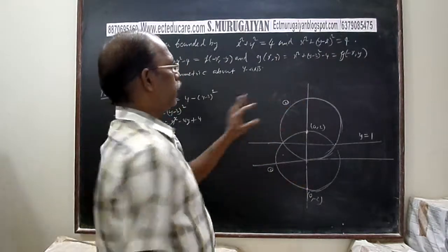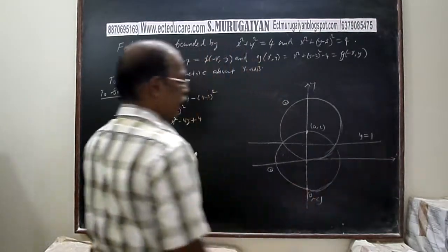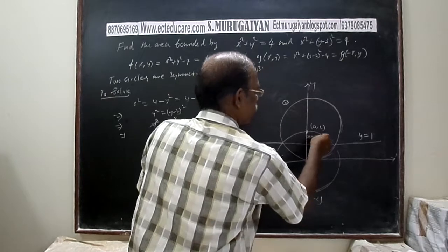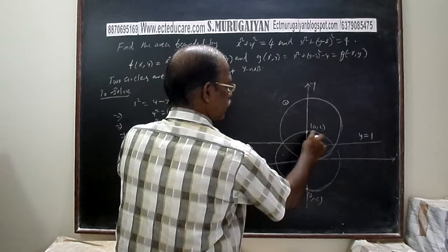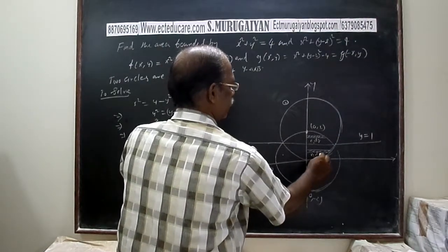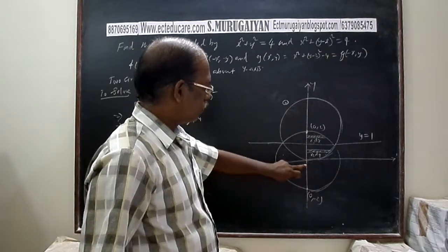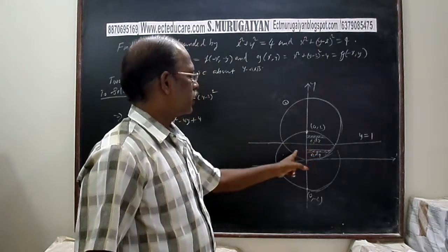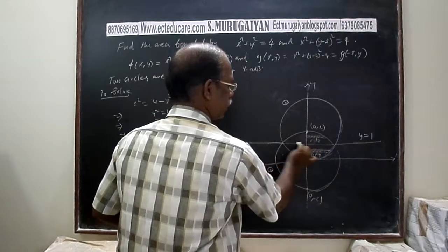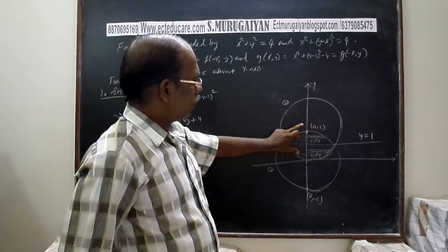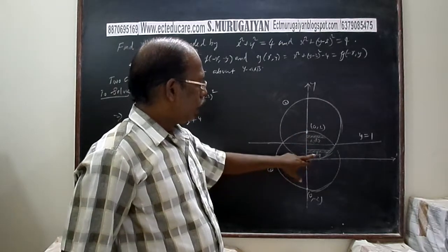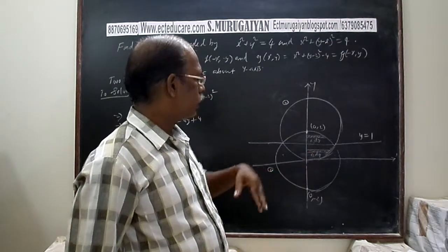Both circles being symmetric about the y-axis, we can use rectangular strips. The area contribution from the first circle is x₁ dy and from the second circle is x₂ dy. Summing these from their limits and multiplying by 2 due to symmetry about the y-axis gives the required area using two integrals: 2∫₀¹ x₂ dy plus 2∫₁² x₁ dy.